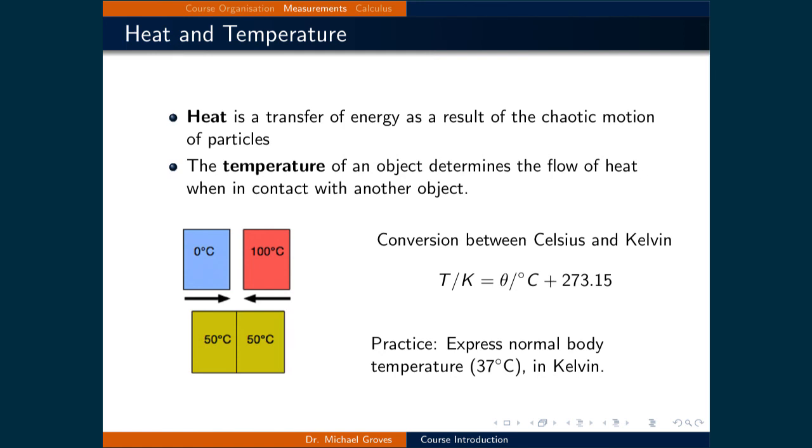The final quantities related to energy that will be introduced is heat and temperature. Like work, heat is also a transfer of energy. However, heat relies on the chaotic motion of particles as its conveyance of energy. The temperature of an object is a quantity that determines the direction of the transfer of energy due to heat. So if a block at 0 degrees Celsius were to be put in contact with an identical block at 100 degrees Celsius, the difference in temperature indicates that the energy is transferred as heat from the 100 degrees Celsius block to the 0 degrees Celsius block.